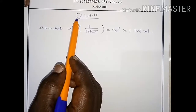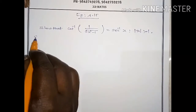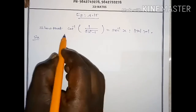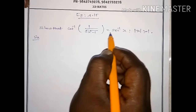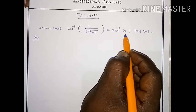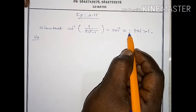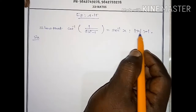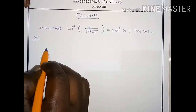Hi students. Now we will see example 4.15: show that cot inverse of 1 by root of x squared minus 1 equals secant inverse x, such that modulus of x is greater than 1.